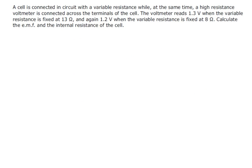A cell is connected in a circuit with a variable resistance, while at the same time a high resistance voltmeter is connected across the terminals of the cell. The voltmeter reads 1.3 volts when the variable resistance is fixed at 13 ohms, and again 1.2 volts when the variable resistance is fixed at 8 ohms. Calculate the EMF and the internal resistance of the cell.